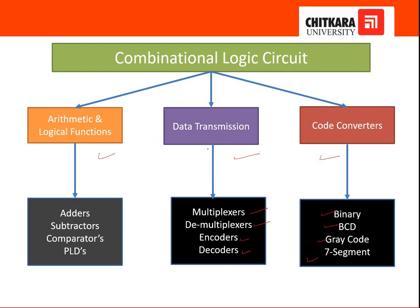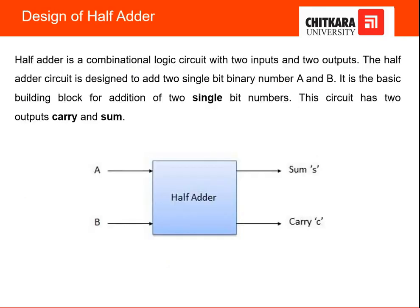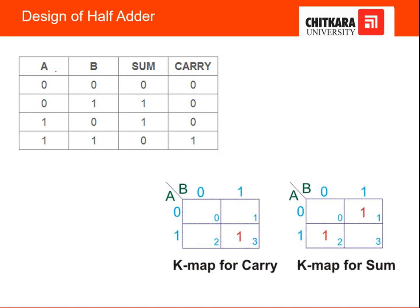Now let us understand the half adder circuit. A half adder circuit is a combinational logic circuit with two inputs and two outputs. The two inputs are A and B, and the outputs are sum and carry. We need to design the logic expression and the combinational logic circuit for this half adder. With only two inputs, there are four possible input combinations, since 2 raised to the power 2 equals 4.